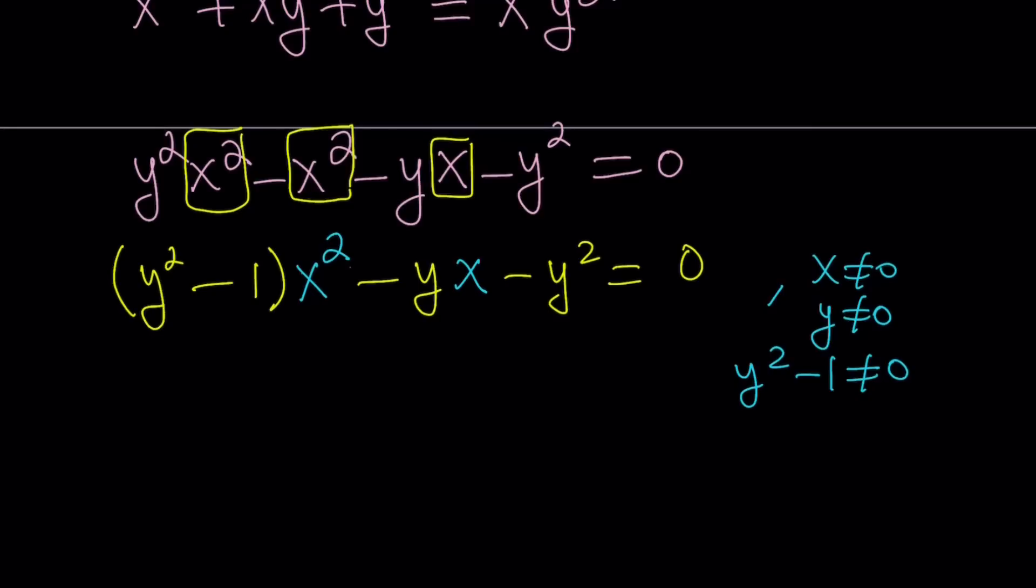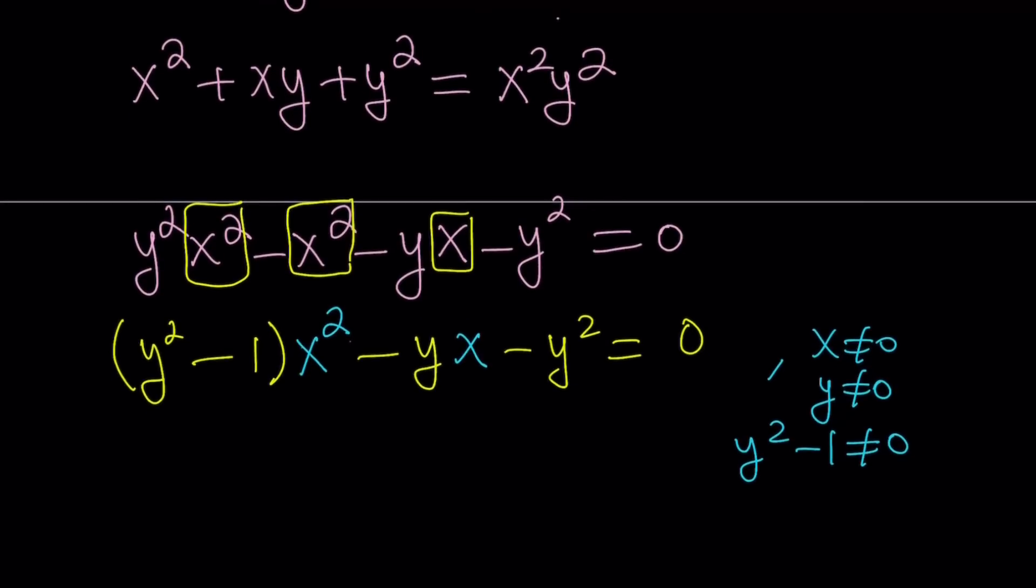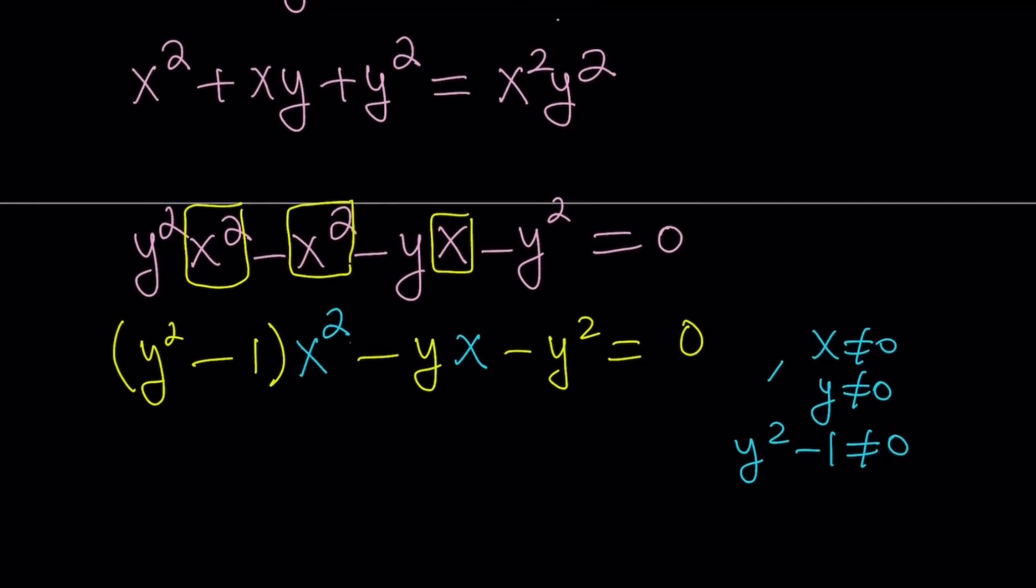Now, if, for example, if y is equal to 1, then we're going to get the following. We're going to get x squared. Suppose y equals 1. Then we're going to get x squared plus x plus 1 equals x squared. And then if you cross those out, you're going to get x equals negative 1 from here. So if y is equal to negative 1, x is equal to negative 1. Now here's one thing to be careful about.